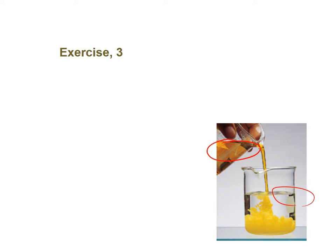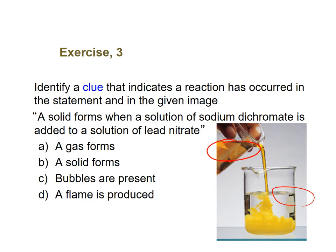And then if you look here, this is nice and cloudy, because what's happening as we're pouring these two solutions together is a solid is actually forming there. That's what makes it look cloudy. And in this case, it's a yellow solid. So a solid forms when a solution of sodium dichromate is added to a solution of lead nitrate. So this time we're seeing that solid form.